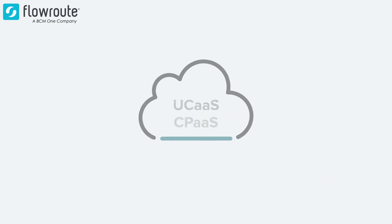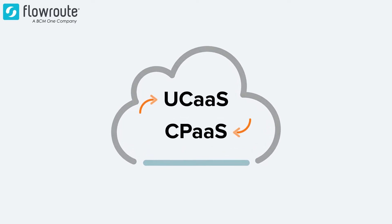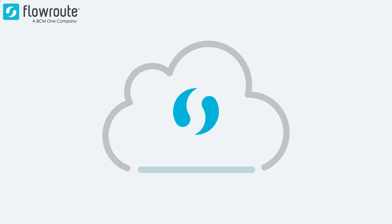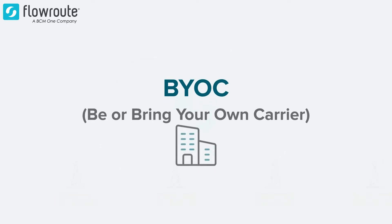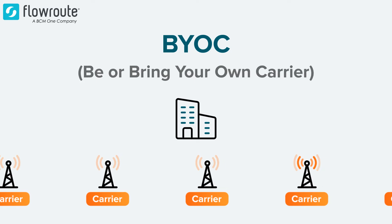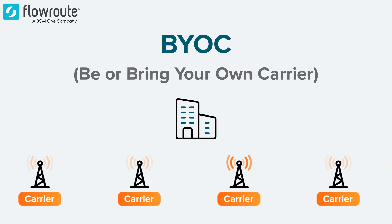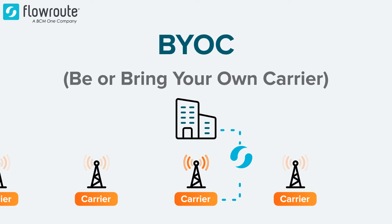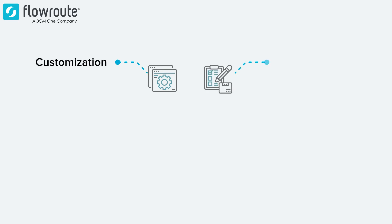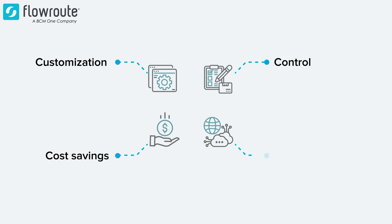How exactly does FlowRoute fit into these communication service models? You can find the answer in FlowRoute's BYOC capabilities, which stands for Bring Your Own Carrier. BYOC means that businesses can choose the carrier they want to power their communication services, whether it be UCaaS or CPaaS. FlowRoute's BYOC model offers customization, control, and cost savings to customers, while also providing them with access to carrier-grade telecom services.